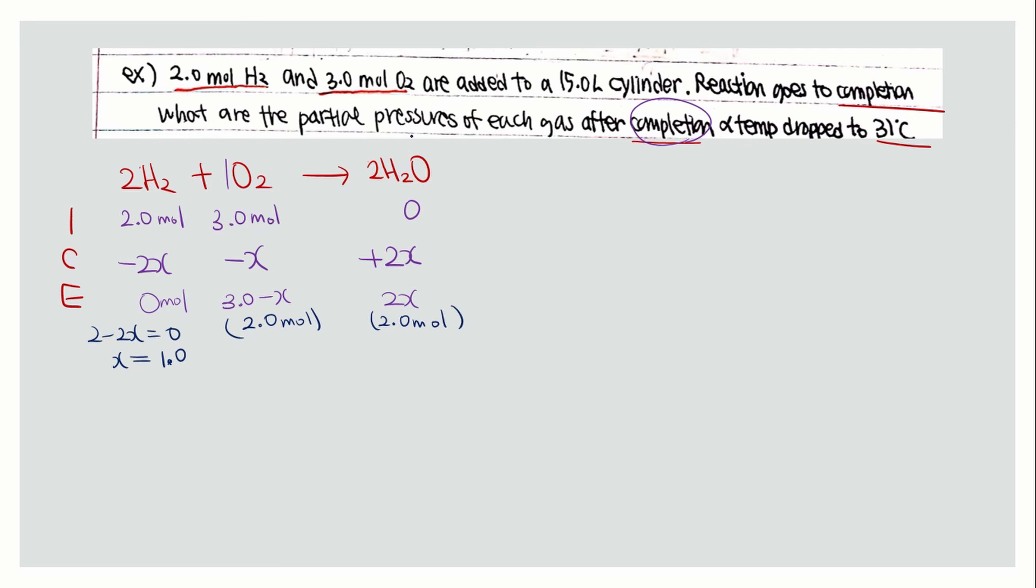To find the partial pressures for each gas after completion when temperature drops to 31 Celsius, use the ideal gas law. For oxygen, we're skipping the hydrogen because there is none left at equilibrium.